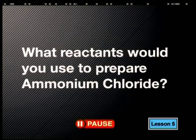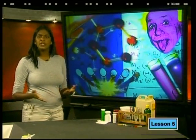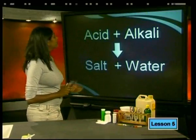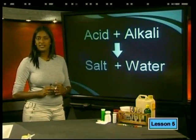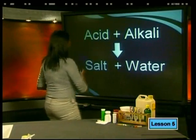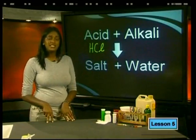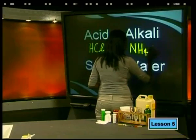If I wanted to make the salt ammonium chloride, what reactants would you use? When given a problem like this, I like to start by choosing a general equation: an acid plus an alkali react to form a salt plus water. If we want to make ammonium chloride, the only acid we can use is hydrochloric acid with the formula HCl. The alkali to use must be ammonium hydroxide with the formula NH₄OH.